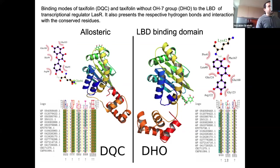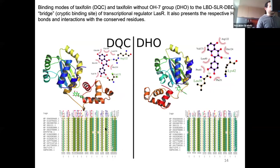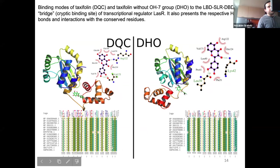In the case of the second binding site, which corresponds to the DNA binding domain, as you can see here, the normal taxifolin molecule interacts with many residues, including certain amino acid residues. Removing the OH group decreases the number of residues participating in the interaction.